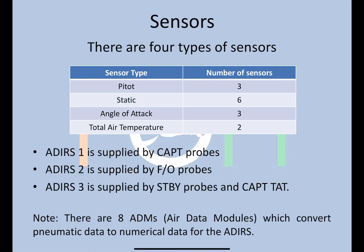There are four types of sensors: pitot, static, angle of attack, and total air temperature. The quantities are: 3 pitot probes, 6 static ports, 3 angle of attack sensors, and 2 total air temperature probes.